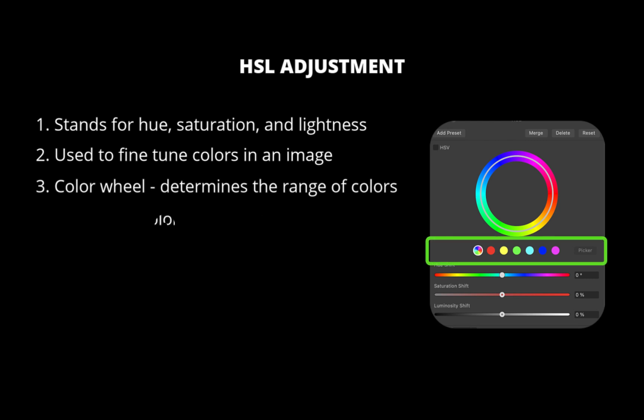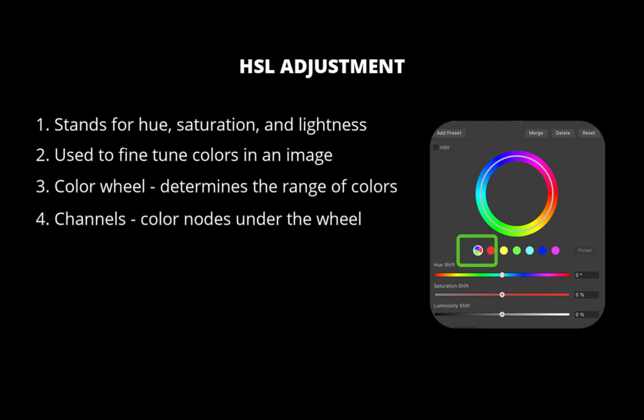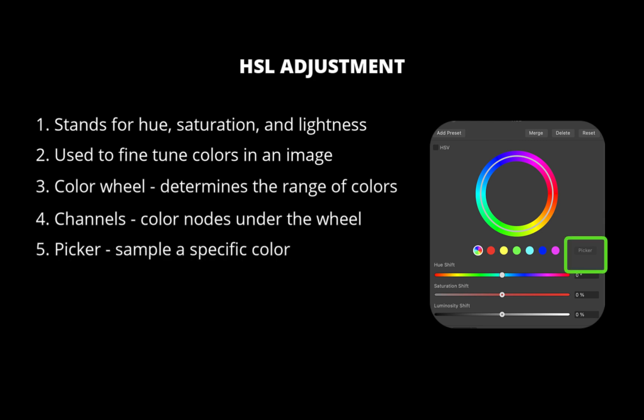The next setting is Channel, represented as color nodes under the wheel. Click the first node, also called the Master, to alter all the colors at once, or click any other node to enable a specific color set. The third setting is the Picker, which allows you to sample a specific color from your image on which to base your adjustment. The currently active color node will be updated after picking a color. Note that the Master node cannot be color-picked.